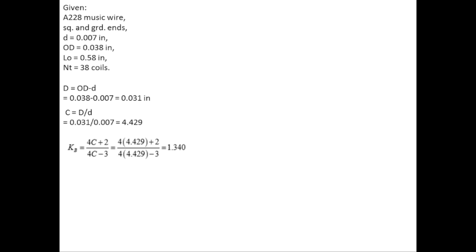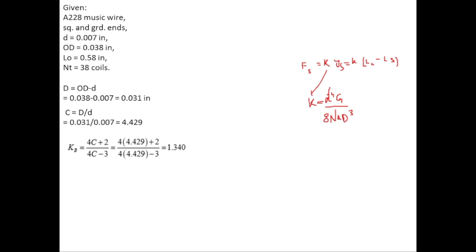Now let's find the solid force FS, which equals K × YS, or equivalently K × (L0 − LS). For that we need K, given by K = d⁴G / (8·NA·D³). We know the wire diameter and mean coil diameter. The value of G can be found from table 10.5, and the formula for NA comes from table 10.1.